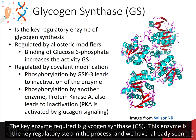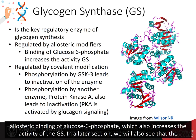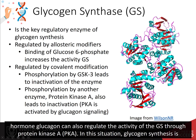The key enzyme required is glycogen synthase, GS. This enzyme is the key regulatory step in the process, and we've already seen how insulin signaling upregulates the activity of this enzyme by inhibiting phosphorylation by the glycogen synthase kinase 3. Other effectors include allosteric binding of glucose-6-phosphate, which also increases the activity of the glycogen synthase. In a later section, we will also see that the hormone glucagon can also regulate the activity of the glycogen synthase through protein kinase A, PKA.